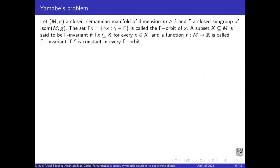The set Gamma·x is called the Gamma orbit of x. And a subset is said to be Gamma invariant if it contains every of their Gamma orbits. And a function is called Gamma invariant if it's constant in every Gamma orbit. We consider the Yamabe type problem.